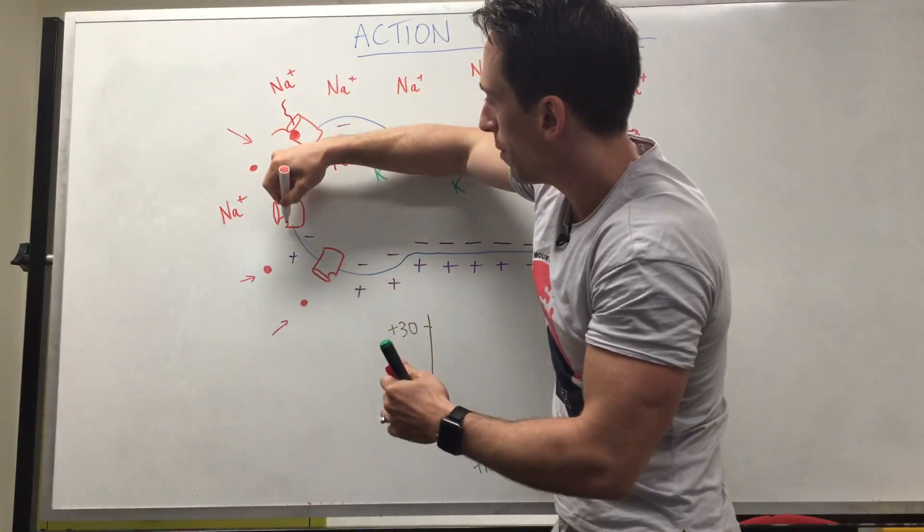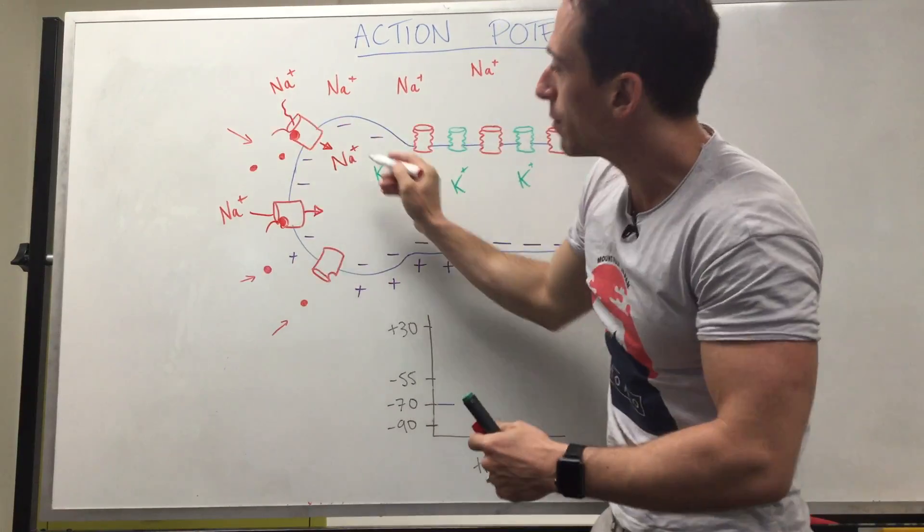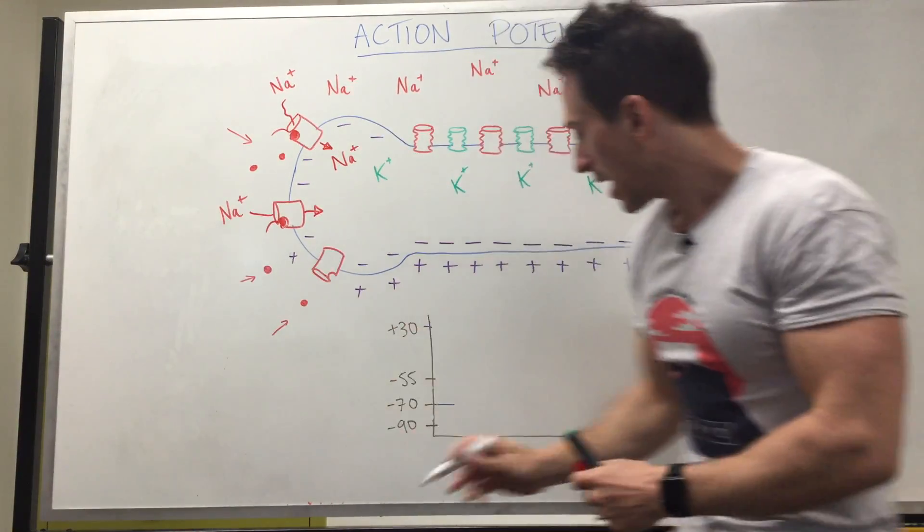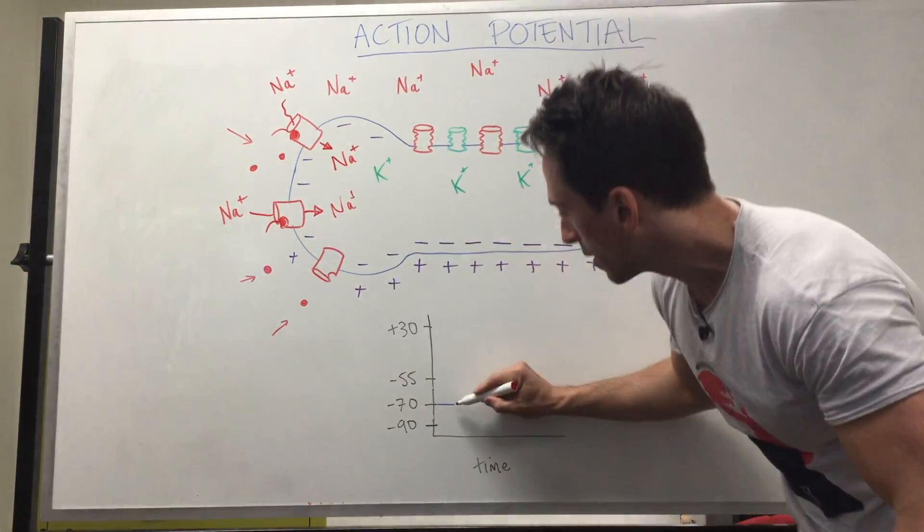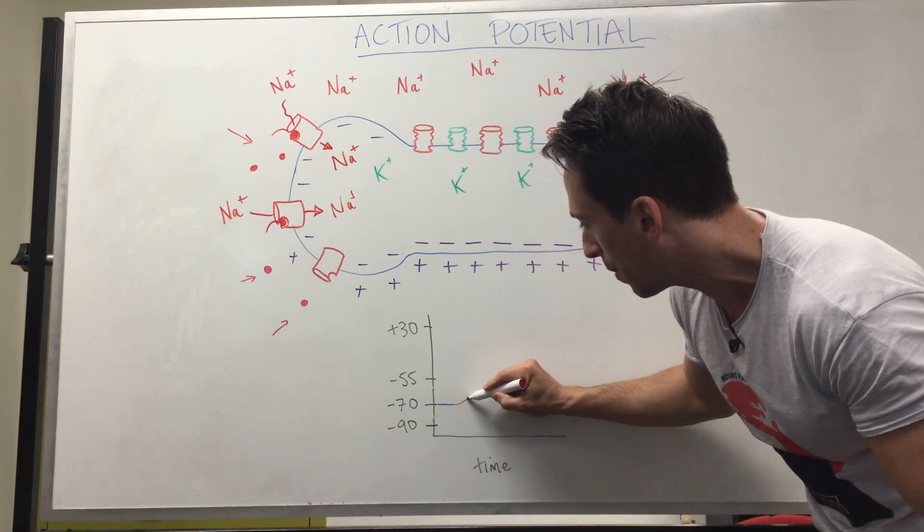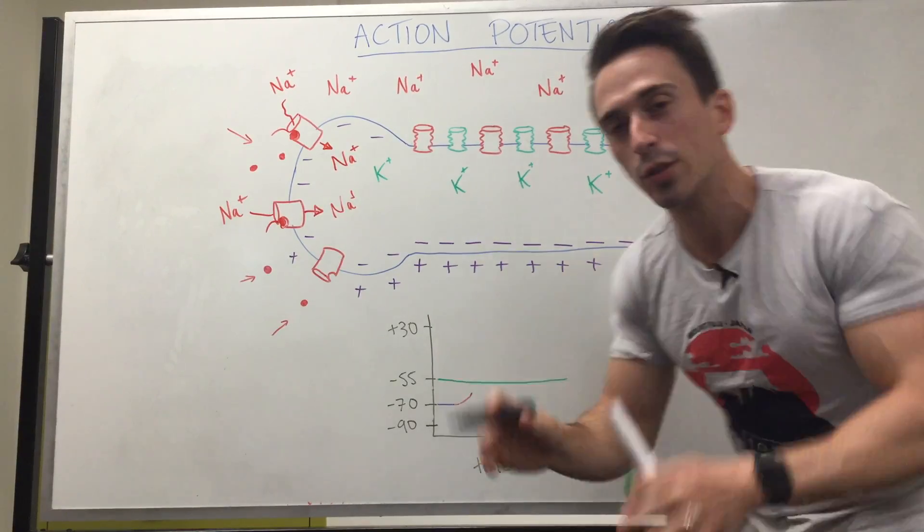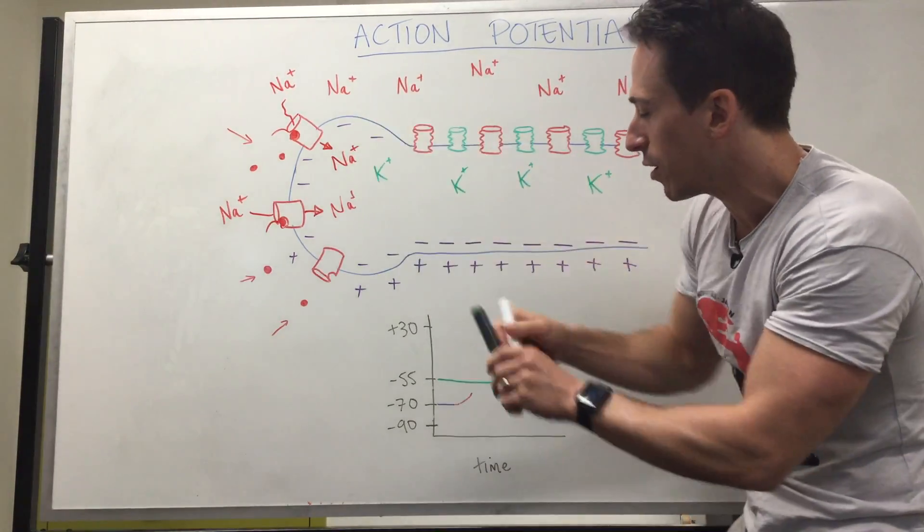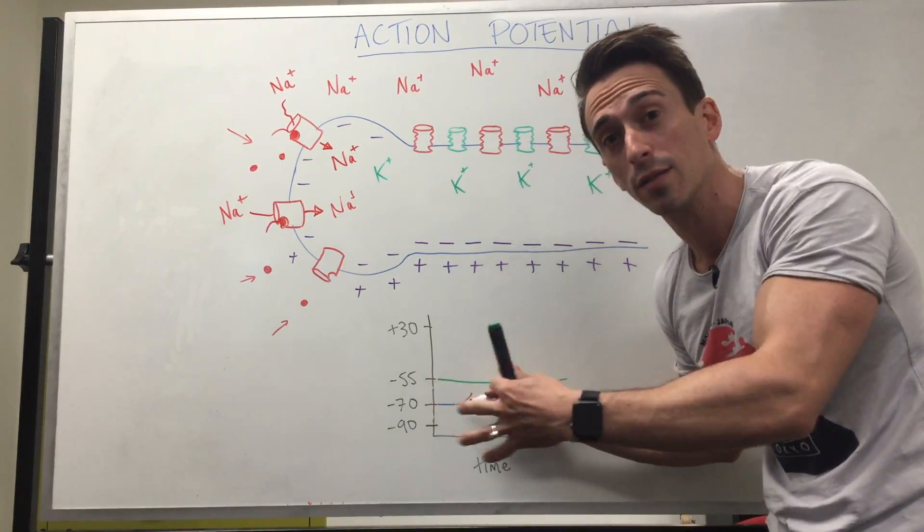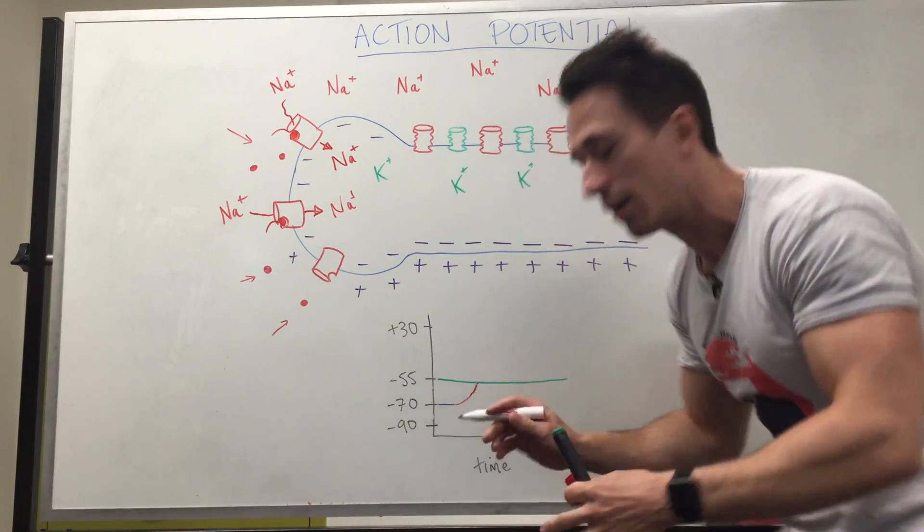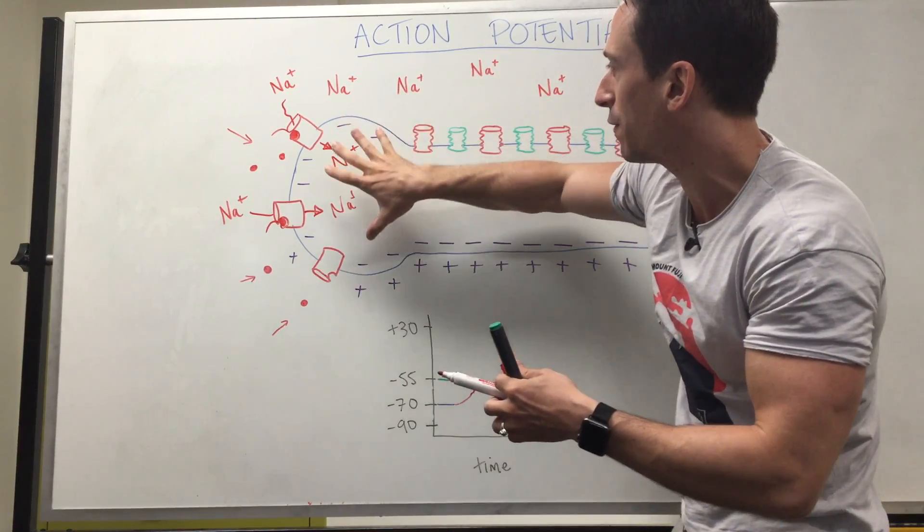If more glutamate binds to these receptors and lets more sodium in, it becomes even more positive inside the neuron. If we look at this graph here, if we let enough positive sodium inside the neuron that it drifts up to -55 millivolts, which we term the threshold - if we let enough positive sodium in that it goes from -70 to -55, so -55 is more positive than -70 - if it hits -55, then we've done something very special. If enough positive sodium has come in that it's now -55, this first sodium channel is going to flip its lid.